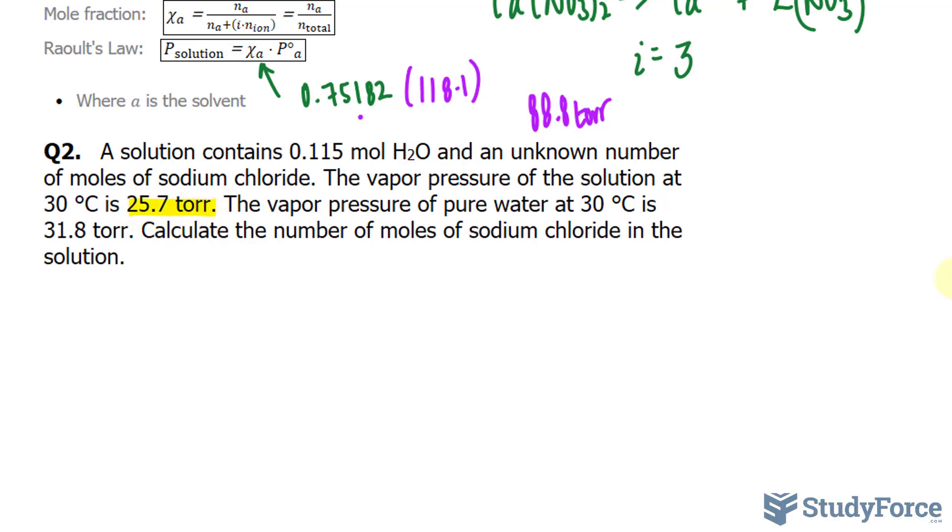Using Raoult's law, I can actually use that along with the partial pressure of water, which is also given, to find the mole fraction. Let's go ahead and do that. We have 25.7, I'm using this formula right here in case you're confused, torr is equal to the mole fraction of water multiplied to the partial pressure of water, 31.8 torr.